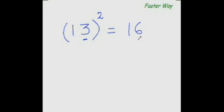Now for the last digit, what do you do? You find the square of the units digit. So what is the square of 3? It is 9. So the answer is 169.